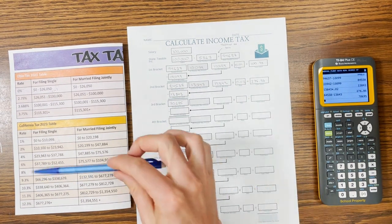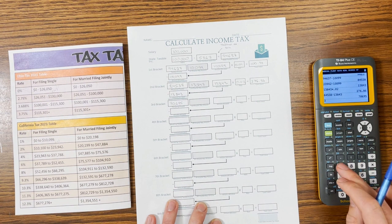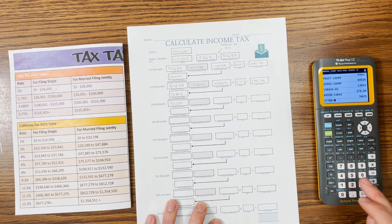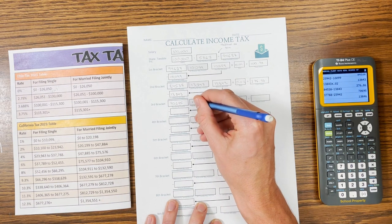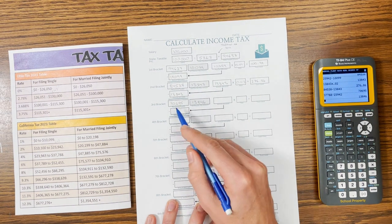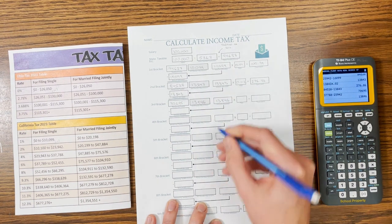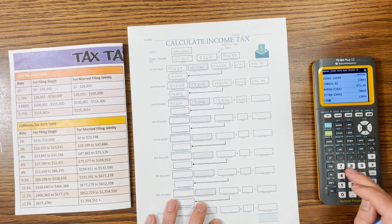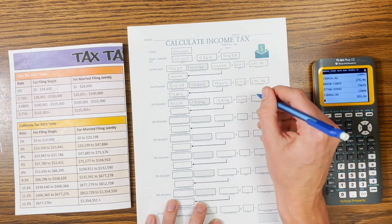So the third bracket holds $37,788 minus the $23,942 that we've already taxed. So $37,788 minus $23,942. So $13,846. So it's almost the same size as the previous one. And we're still much bigger than it, so we're going to fill this one up again. And the rate this time is 4%, so $0.04. So $13,846 times .04, $553.84.